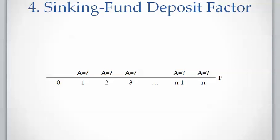The fourth group is similar to the third one, but A is the unknown and F is the given variable. This set of problems asks you to calculate a uniform series of equal payments A, to be invested for N number of time periods at interest rate I. The accumulated future value of all payments, or equivalent future value, is F. This set of problems can be summarized with the factor A over F, where A is the unknown and F is the given.